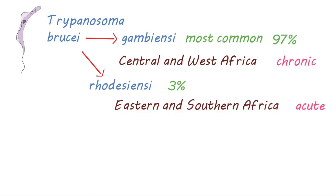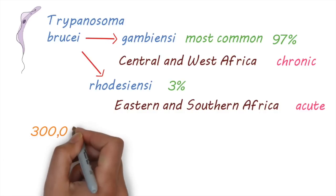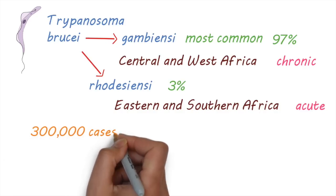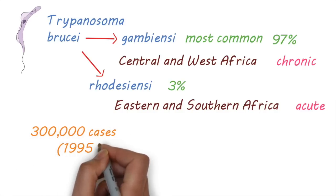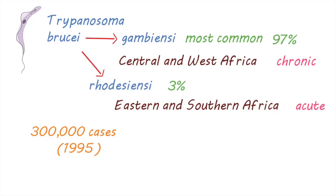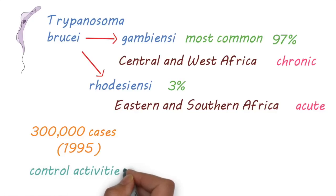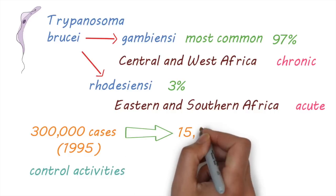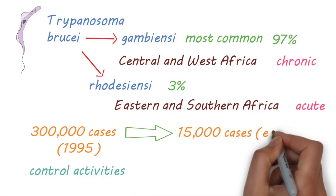Although there were about 300,000 estimated cases in 1995, intense control activities in affected countries have led to a dramatic decline in cases. In 2014, the number of cases was estimated to be about 15,000.